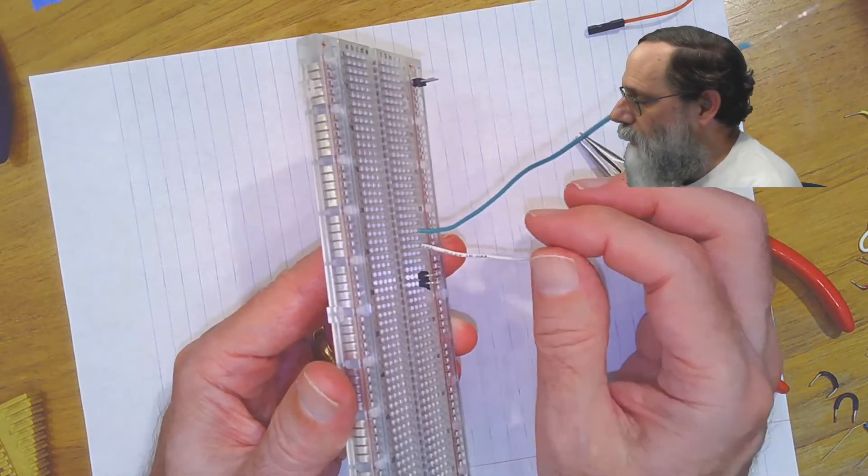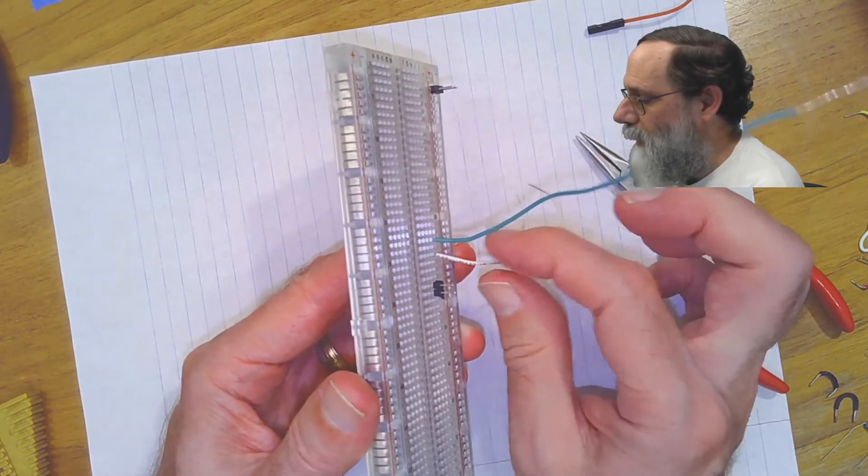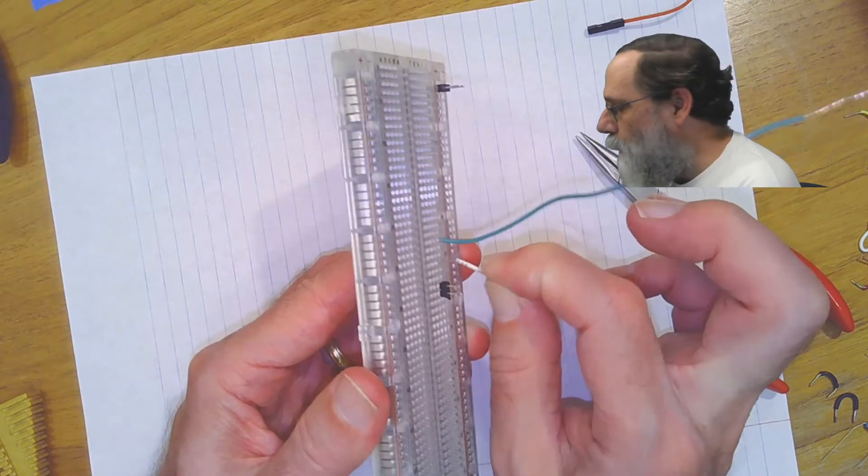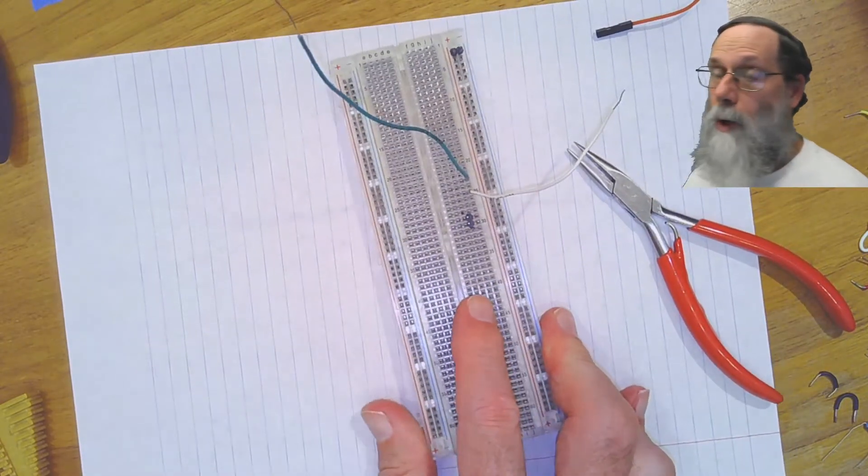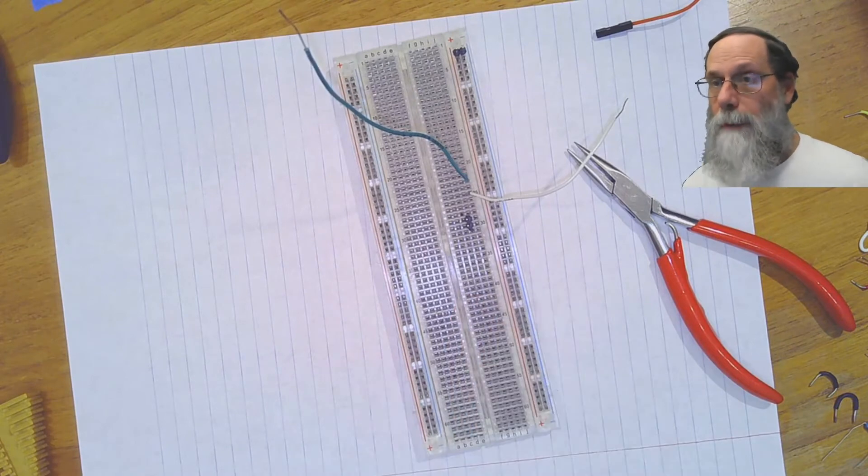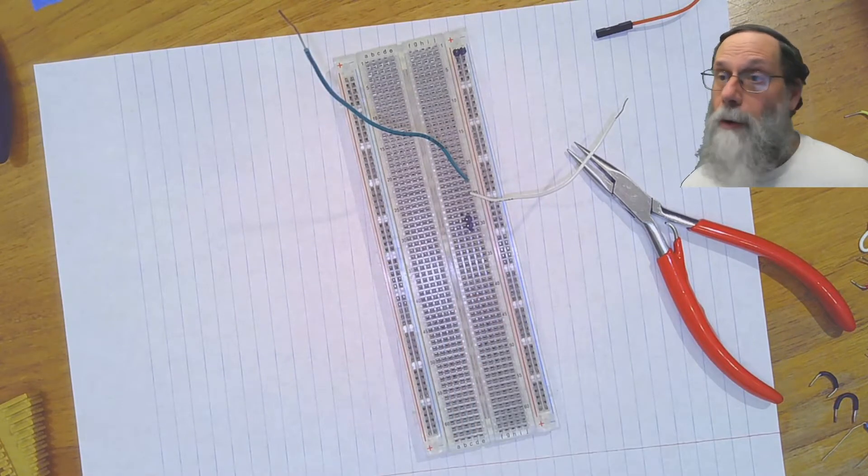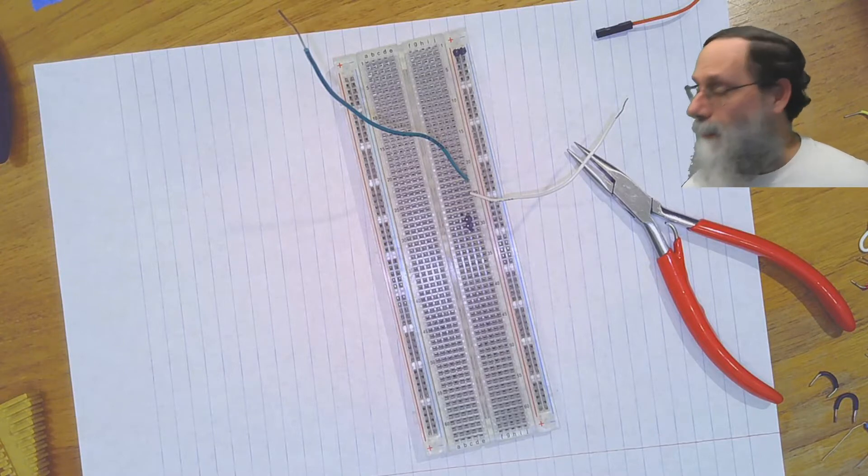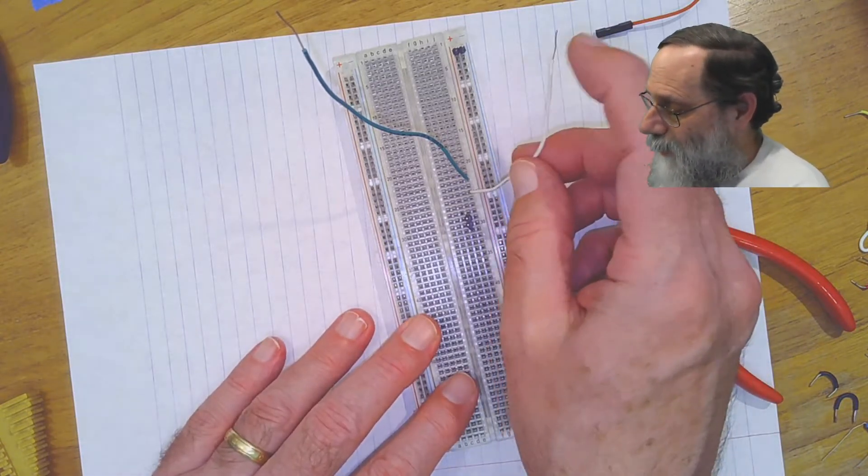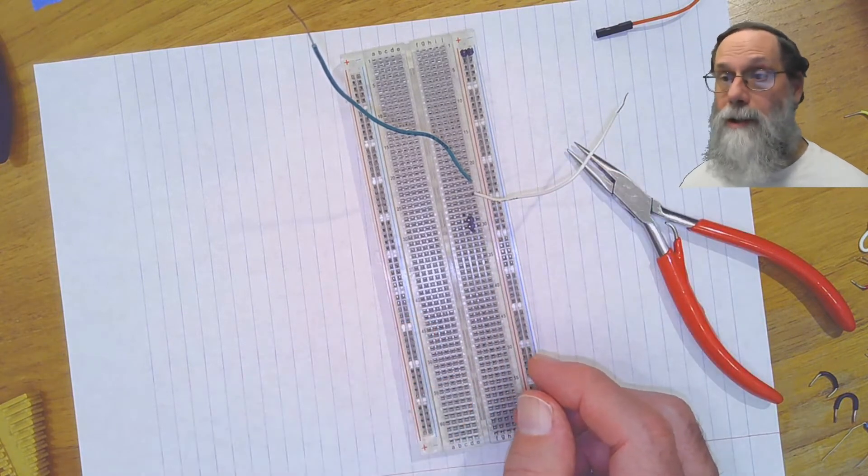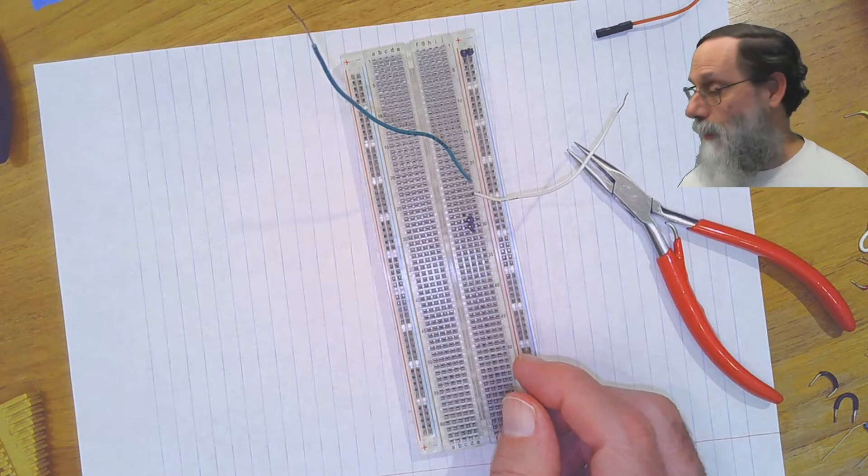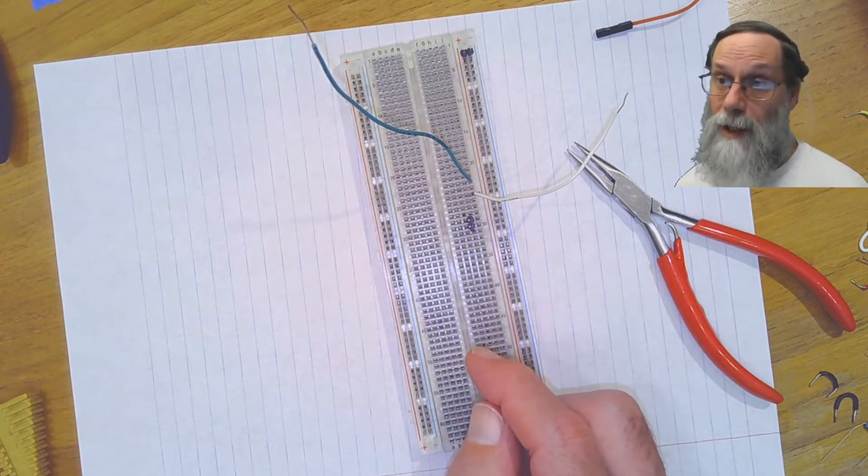Now, I have two different sizes of wire here, and you notice the green wire was much harder for me to get in than the white wire. The green wire is 22-gauge wire. The white wire is 24-gauge wire. Now, theoretically, both these gauges work with breadboards. The problem is the 24-gauge is often a little loose, and if you've got loose connections, it can be very hard to debug your circuit because you think you're making a good connection, and sometimes you're not.